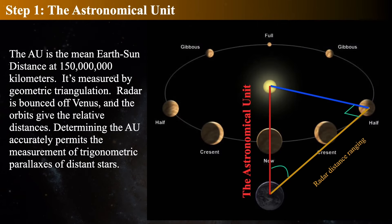Our first step is measuring the astronomical unit. The AU is the average Earth-Sun distance, about 150 million kilometers, and you measure it by geometric triangulation. You bounce radar off Venus when it is at quarter phase—meaning you see Venus as half illuminated—and that means it's at a right triangle with respect to the Sun. You get an angle between the Sun and Venus, bounce radar off Venus because it's very reflective, and use high school trigonometry to get the distance to Venus. Once you get the AU, you can get the relative distances to all the planets.